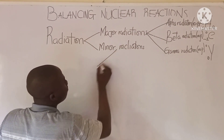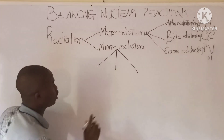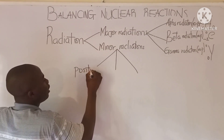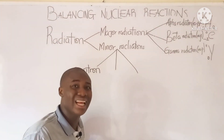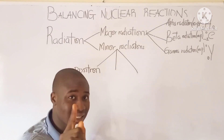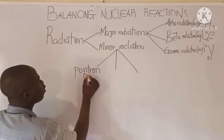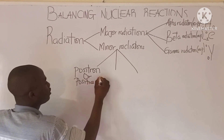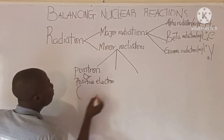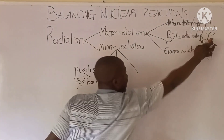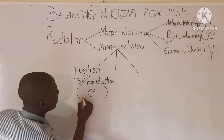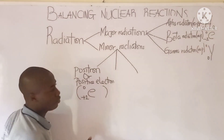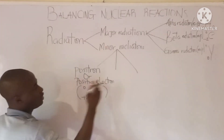Let's move over to the minor radiations. The first is called positron. Positron is simply an electron with a positive charge, also called a positive electron. Its symbol is electron with a positive charge of +1, and here is 0. This is the first minor radiation.